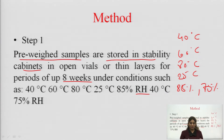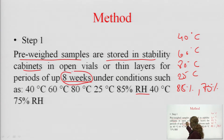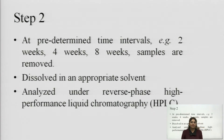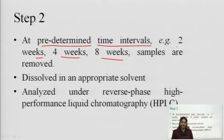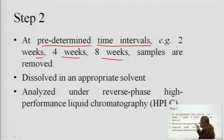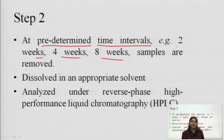We place the drug at accelerated conditions — for example 85% and 75% relative humidity — under high stress conditions. We keep the drug in the stability chamber for up to 8 weeks, checking at 1-week intervals. Samples are removed at predetermined time intervals: 2 weeks, 4 weeks, and 8 weeks. After collection from the stability chamber at different time intervals, we analyze them to see at which time interval the drug stays stable.